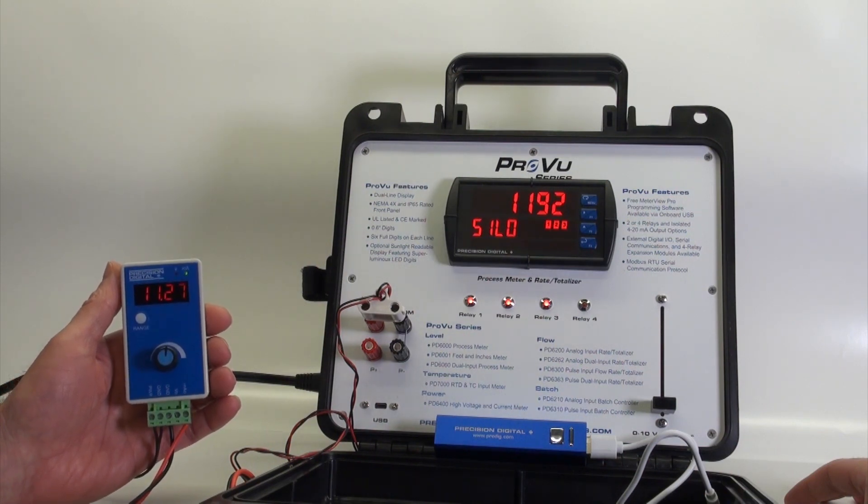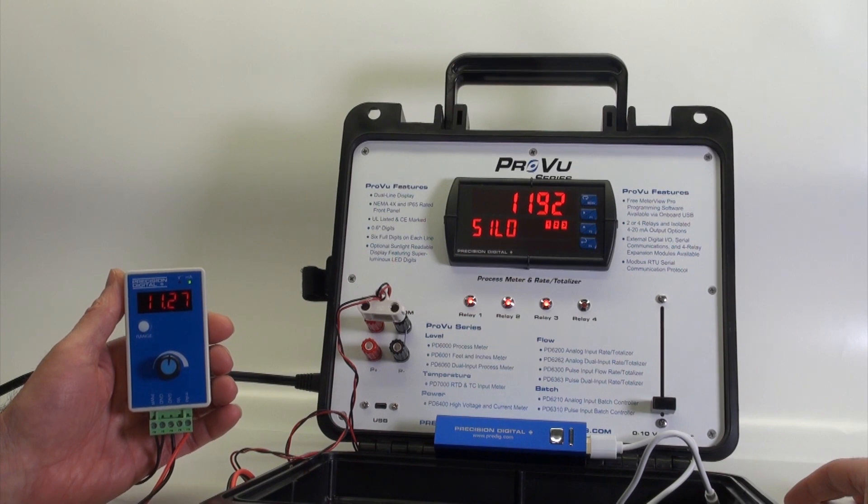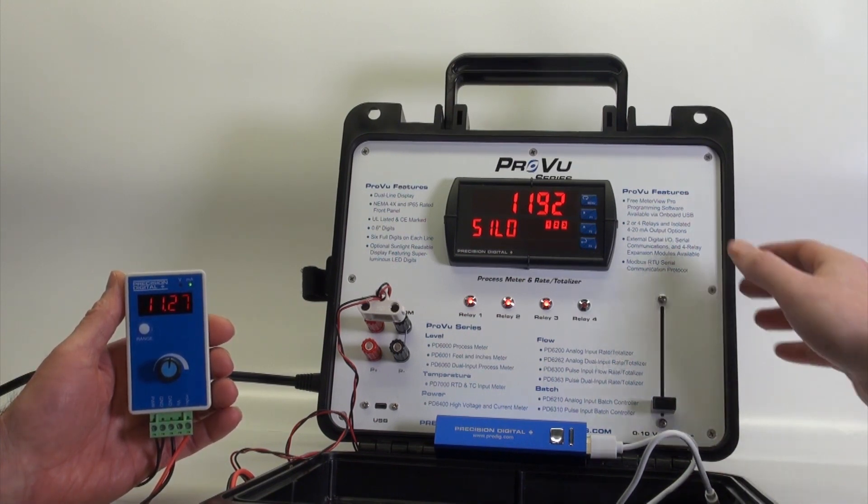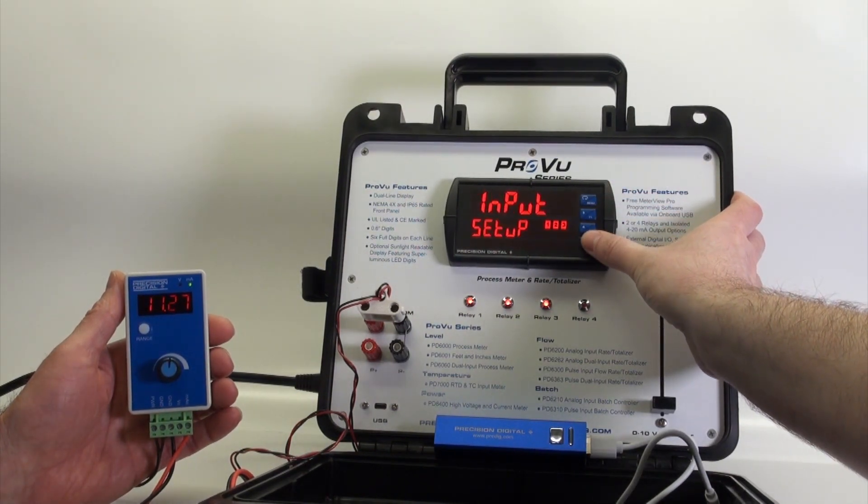What we have here is the PD9502 connected to a PDD6000 demo. We're going to demonstrate how you can quickly calibrate a device using the PD9502. We're going to program the meter to take in a 4 to 20 milliamp signal.